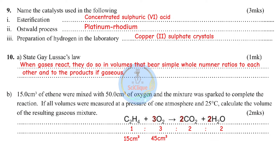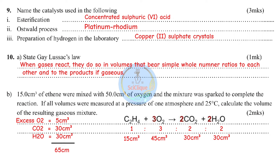If 1 mol is equivalent to 15 cm³, then 3 mol requires 45 cm³ of oxygen. We had 50 cm³, leaving 5 cm³ of excess oxygen unreacted. CO₂ produced: 2 × 15 = 30 cm³. Water vapor produced: 30 cm³. The resulting gaseous mixture contains CO₂ (30), water vapor (30), and excess oxygen (5): total = 65 cm³.